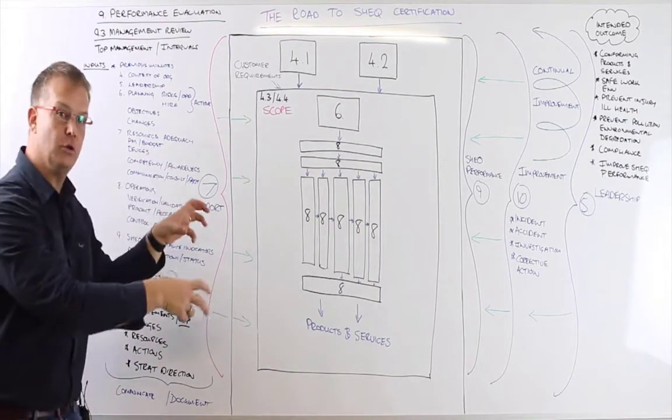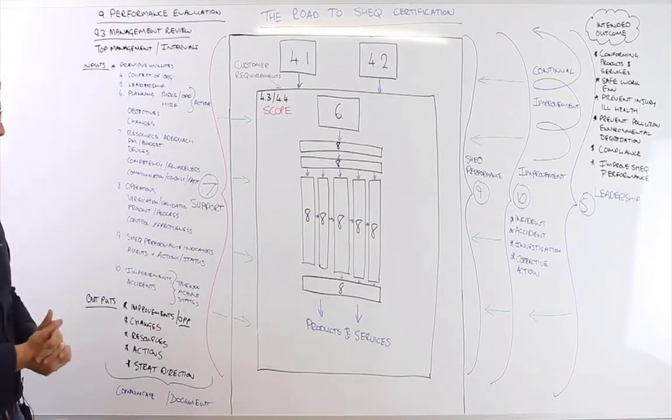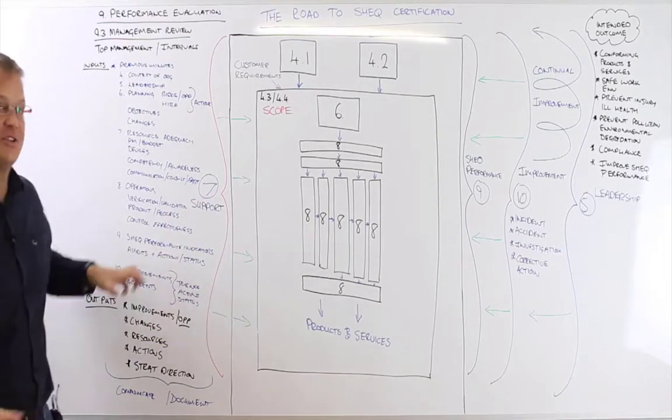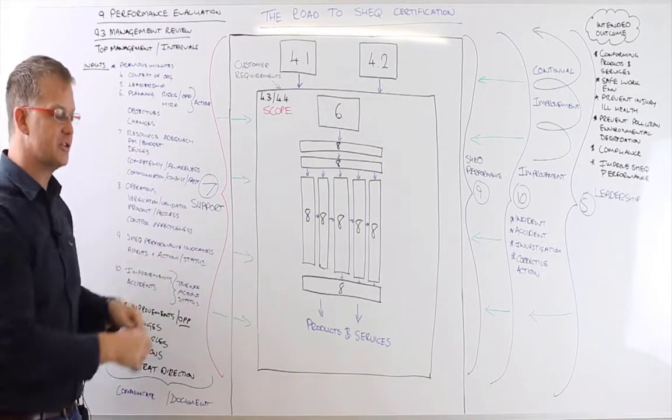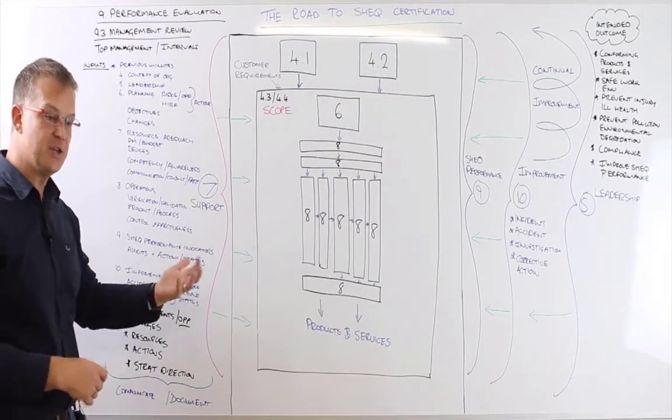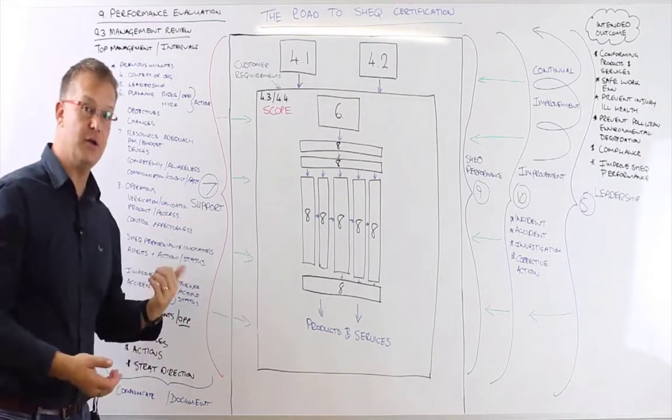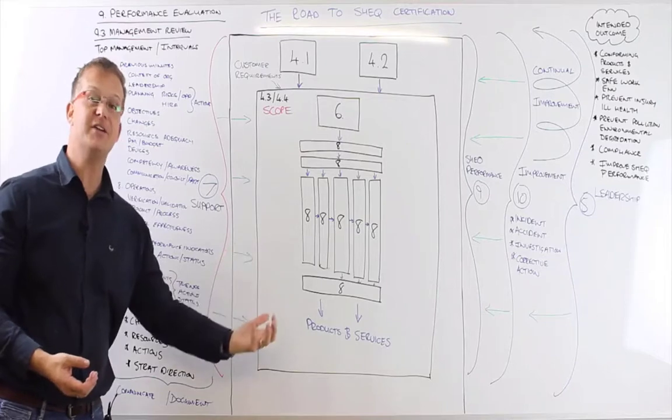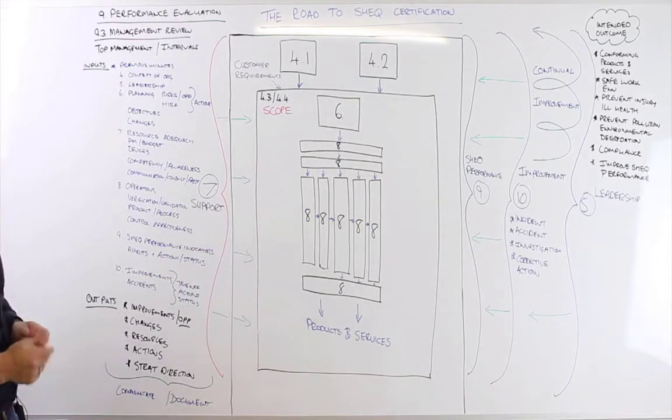We'd have a look at audits, our internal audits and our evaluation of compliance. We'd have a look at actions and the status of those particular actions. And if audit findings are raised, what has been done about them? Have they been closed down? Has the effectiveness of the corrective action taken, has that been reviewed?